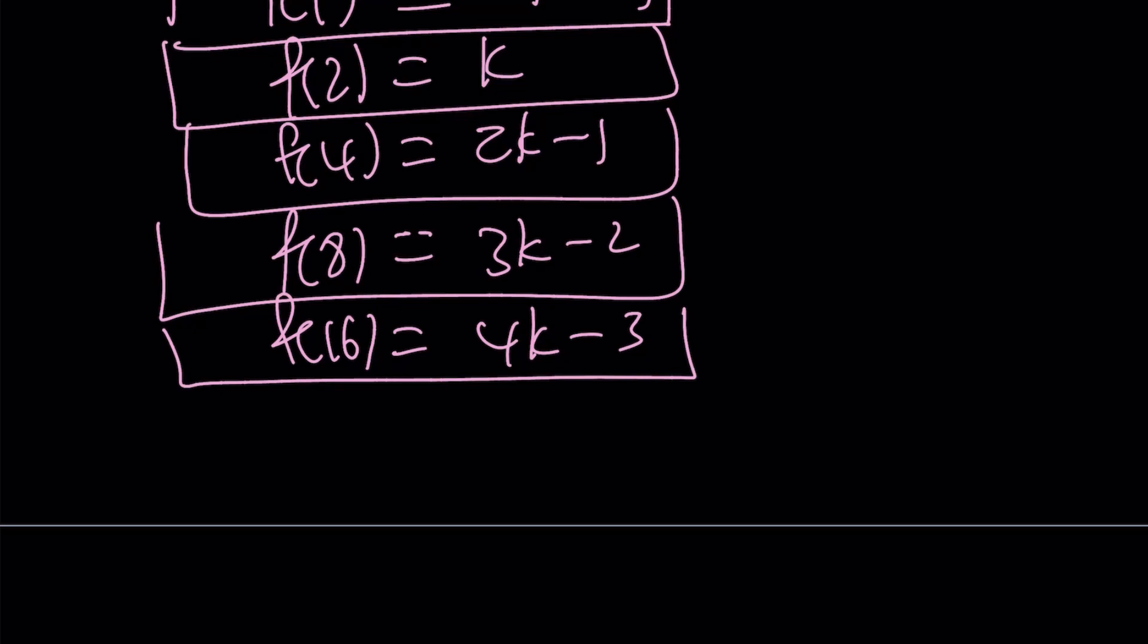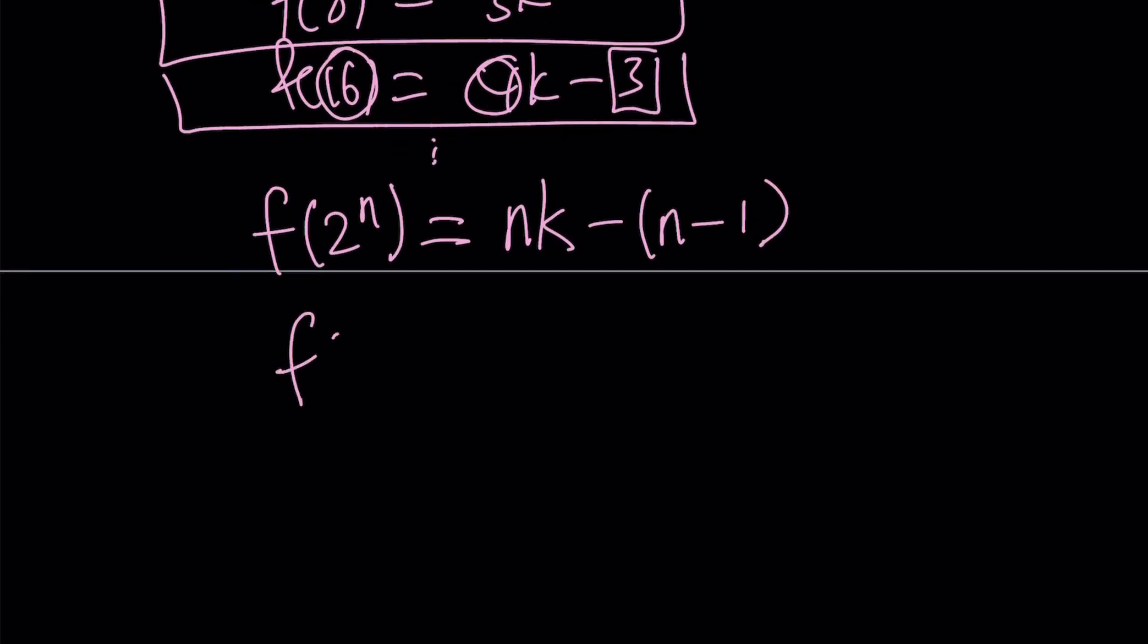I hope this makes sense. Hopefully, you see the pattern. And looking at the pattern, I'm just guessing that f of 2 to the power of n - notice that 16 is 2 to the fourth power, so that number goes here, n goes here, multiply by k. And I'm subtracting 1 less than 4, which is 3. And that is supposed to be n minus 1. So from here, f of 2 to the power of n equals nk minus n plus 1.